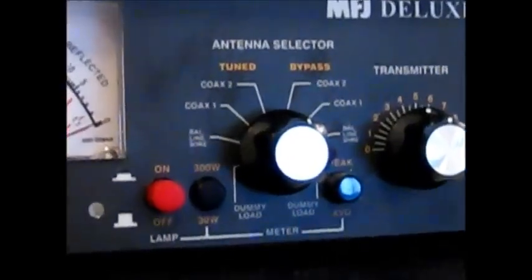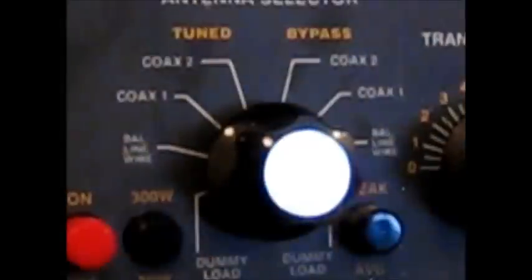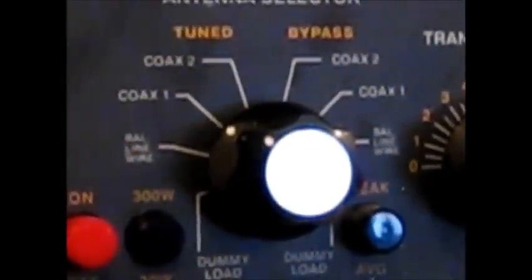So the first thing I'm going to do is take it out of bypass and I want to run the RF through the tuner. So I'm going to put that to coax one. And now I'm going through the tuner.